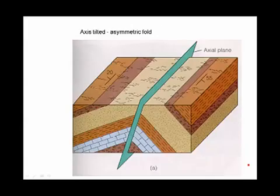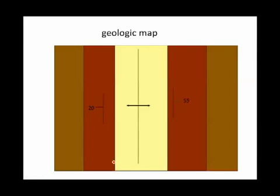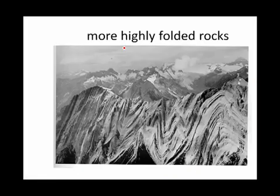Here we have an anticline, but the two limbs of the anticline have different dips. The left side is dipping 20 degrees, while the right side is dipping 55 degrees. In this case, we have it's asymmetrical, and the axis of the fold is at an angle. If you were to see this on a geologic map, it would look like this. Once again, this is the symbol for an anticline.